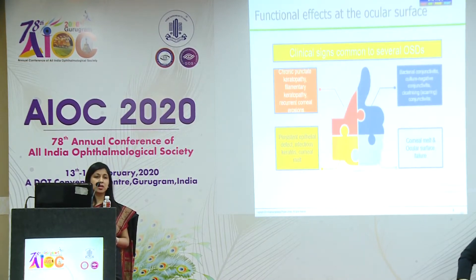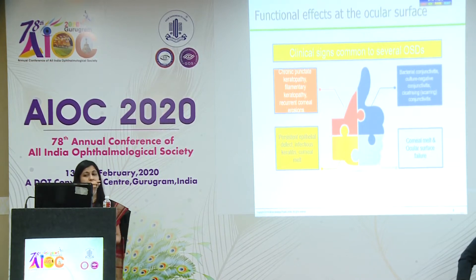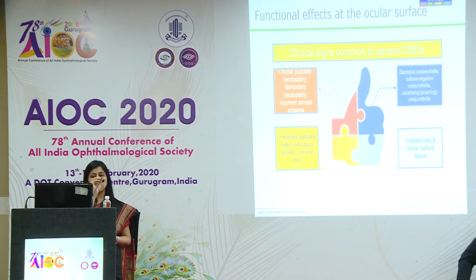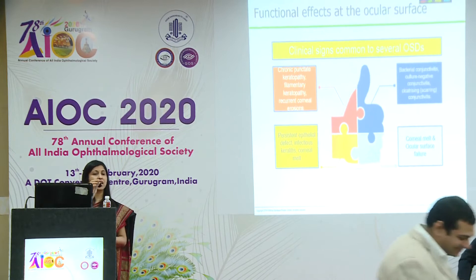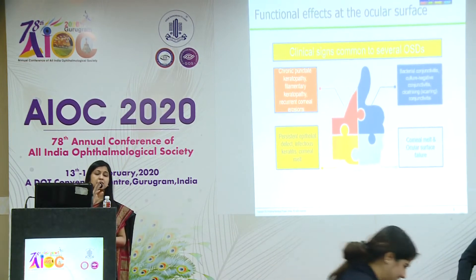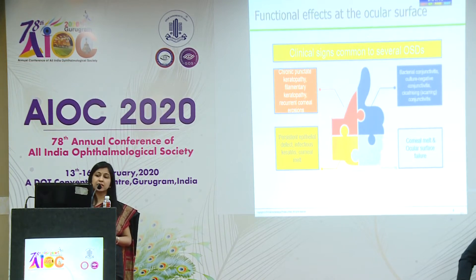When we come to the functional effects at the ocular surface, it's very important to know that the clinical signs are very common to most of the diseases. Once you evaluate these patients properly and look out for specific clinical signs like chronic punctate keratopathies, filamentary keratopathies, recurrent erosions, PEDs, infectious keratitis, and melts — management becomes easier if one knows what to look for.